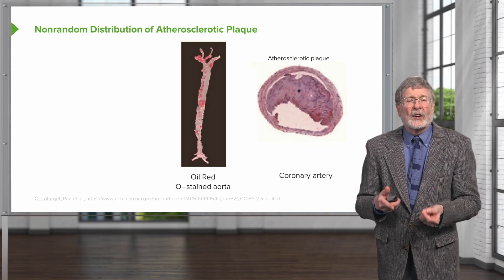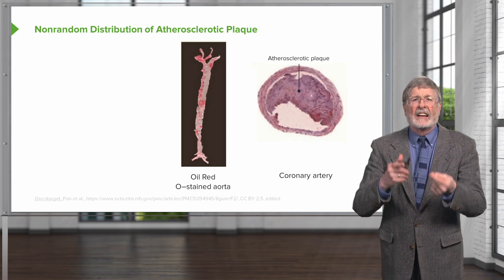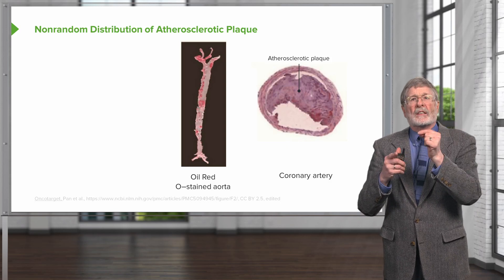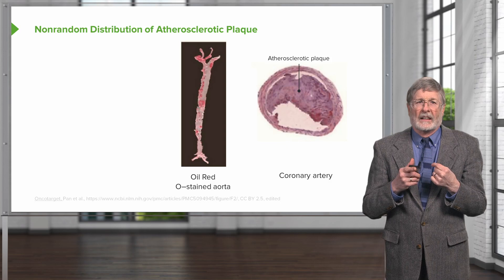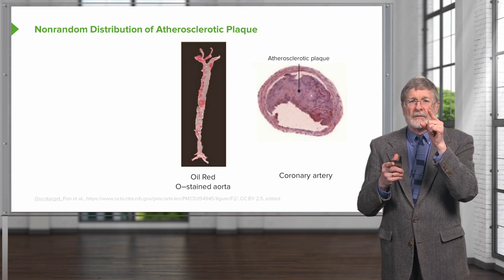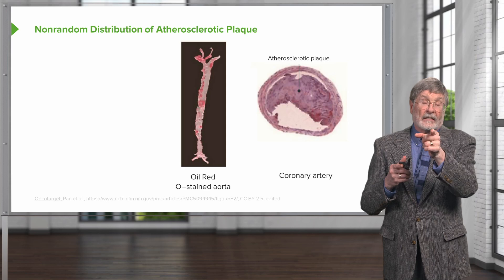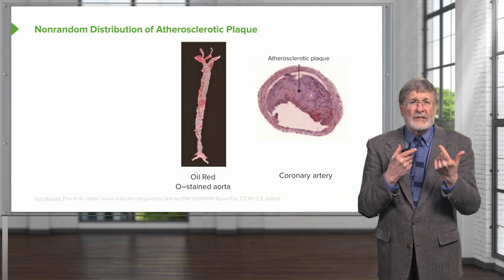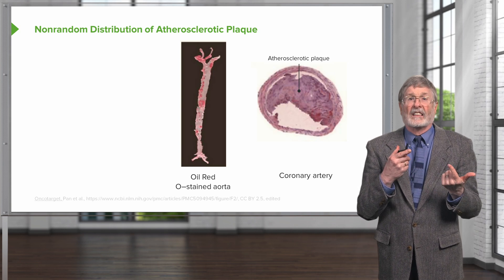And yet, when we look at atherosclerosis, it is not a uniform process. Only certain parts of certain vessels are impacted. It's a non-random distribution. The image in the middle there — that has black — that's an aorta. We have taken the aorta out and labeled it with a compound called oil red O, which will stain lipid deposits in atherosclerotic plaque. That red is only in certain areas. It's not everywhere.